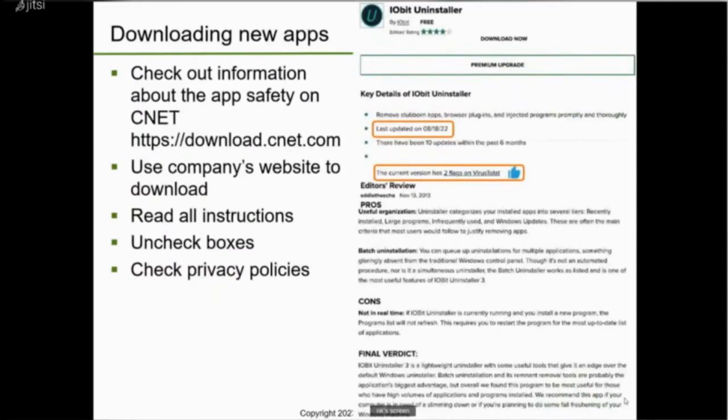When you want to download new software, you can check out the safety of the app. One site that's really helpful is CNET because they have a lot of software to download. You can search for the software you're thinking of downloading and they do a review of it. For example, in the first red box you can see 'last updated 8/18/22' — you want to make sure software gets updated on a regular basis because updates mean it's more secure.